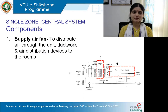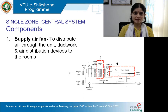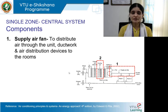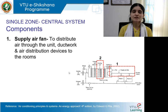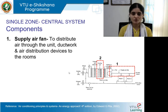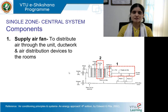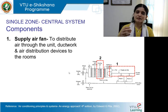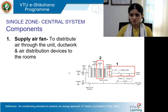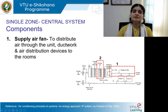We will understand the components step by step. Number one: the supply air fan, marked to the right side. It is used to distribute air through the unit, ductwork, and air distribution devices to the respective rooms. The supply air fan handles the final output — that is, the cooled, cleaned, and dehumidified air — and supplies it through the ductwork to the terminal end, which is the air device where cool air enters the room.